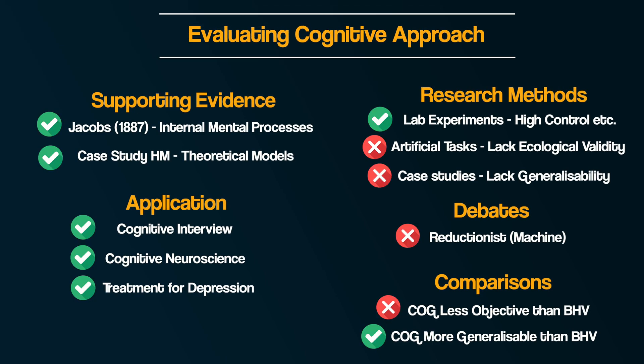Now that you hopefully understand something of the strengths and limitations of the cognitive approach, bear in mind how you can order and structure your discussion about the approach in an essay. Notice how we've used a variety of evaluation points to use our wider understanding of psychology to evaluate this approach. You certainly don't need to write all of these points in an exam, so just pick four that you understood the best. For more on the other approaches in psychology, check out the links to the playlist in the description below. I hope you found this video helpful and we'll see you in the next one.